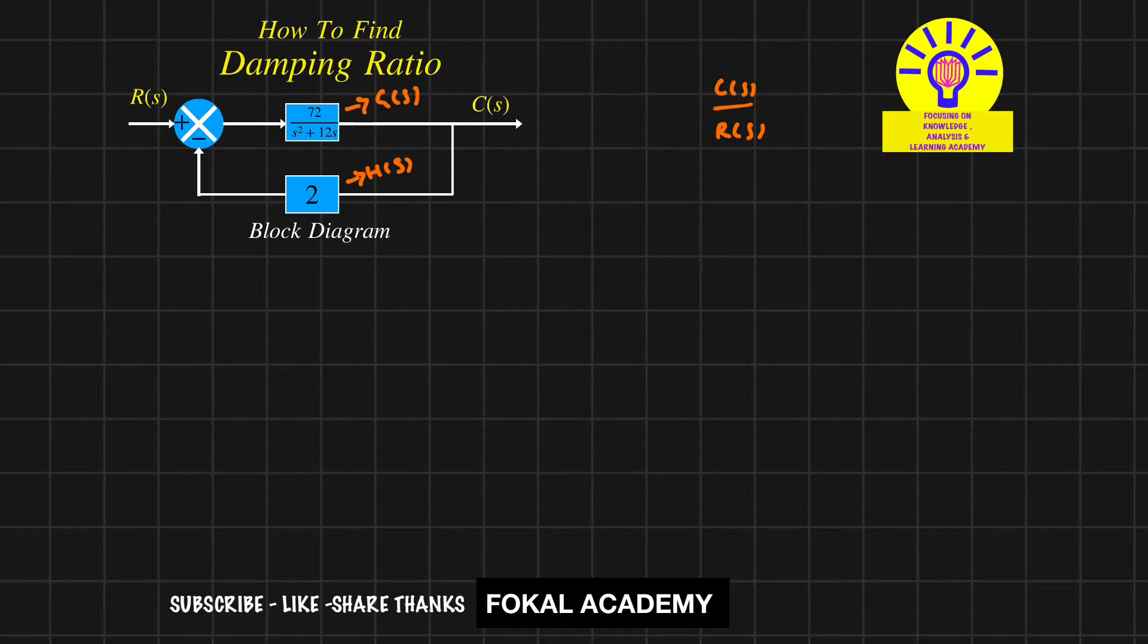The transfer function in terms of forward and feedback gains equals G(s) divided by 1 plus G(s)H(s). Since this is negative feedback, we take the positive sign here.